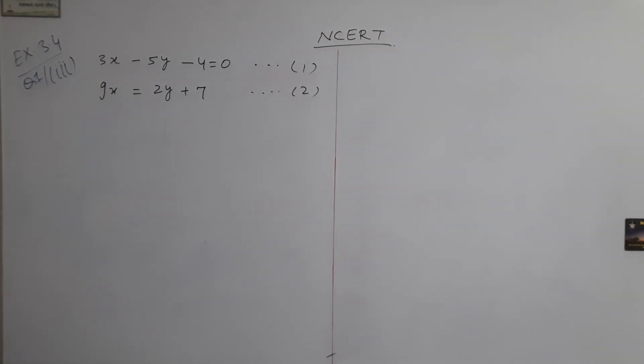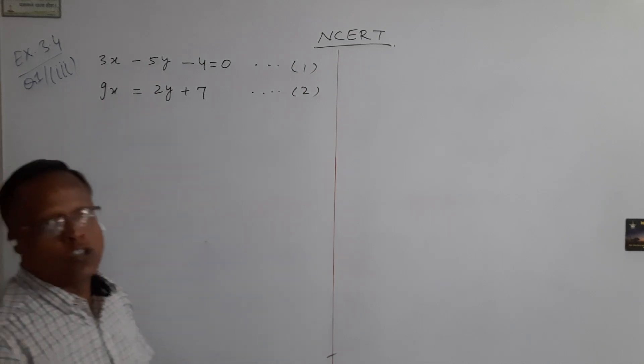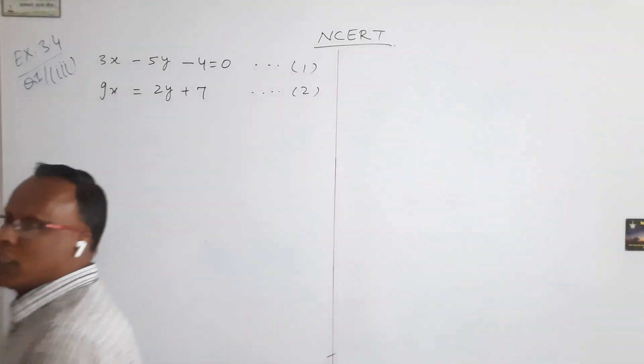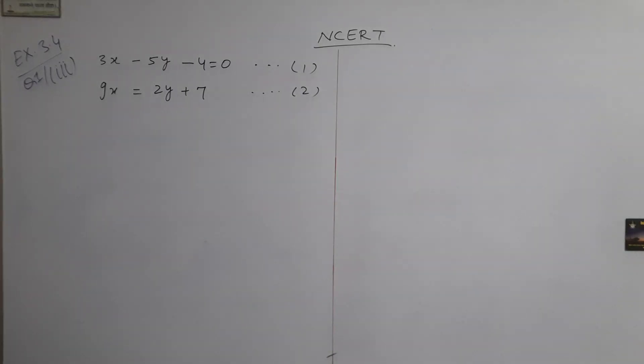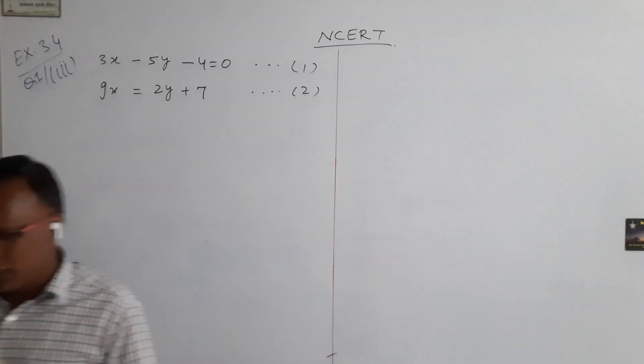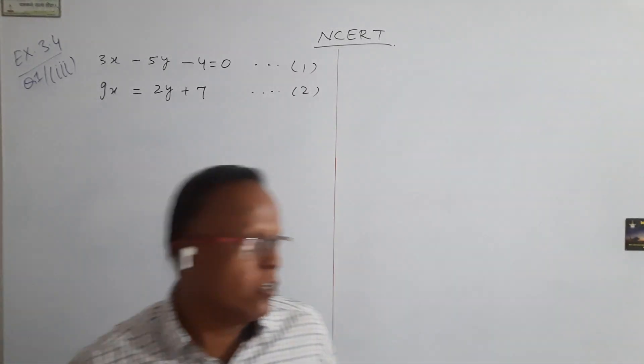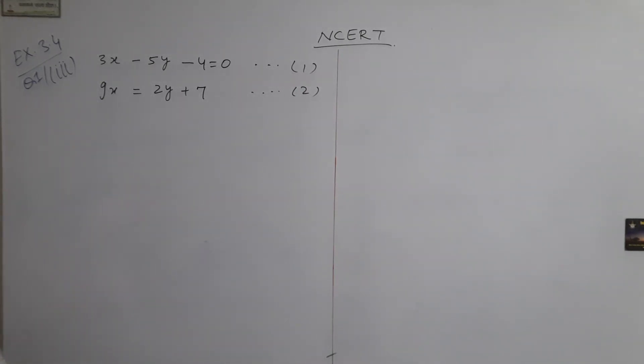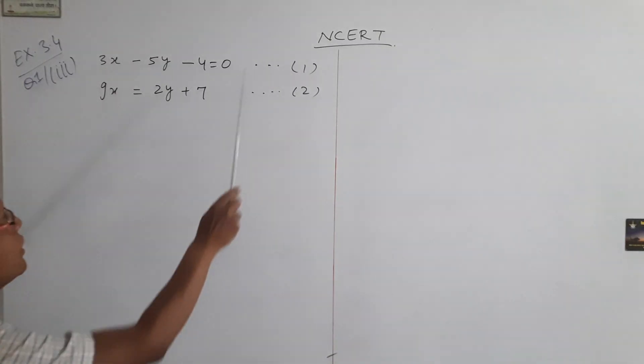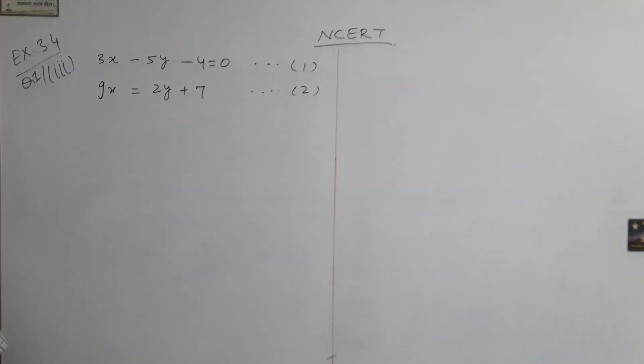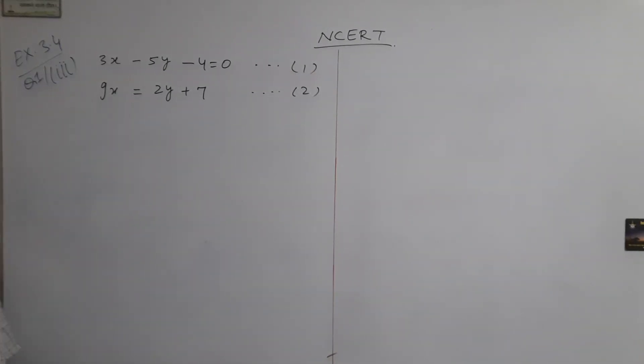Hello students, NCERT class 10th exercise 3.4, question 1, third part. The question is solve the following pair of linear equations by the elimination method. Your given pair of linear equations are 3x minus 5y minus 4 equal to 0, equation number 1. And your another equation is 9x equal to 2y plus 7, equation number 2.